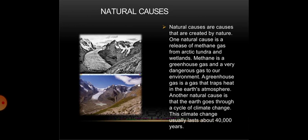One natural cause is the release of methane gas from arctic tundra and wetlands. Methane is a greenhouse gas and a very dangerous gas to our environment. A greenhouse gas is a gas that traps heat in the earth's atmosphere. Another natural cause is that the earth goes through a cycle of climate change, which usually lasts about 40,000 years.